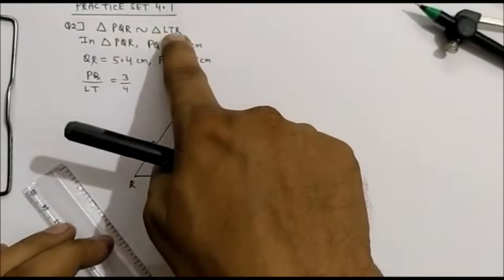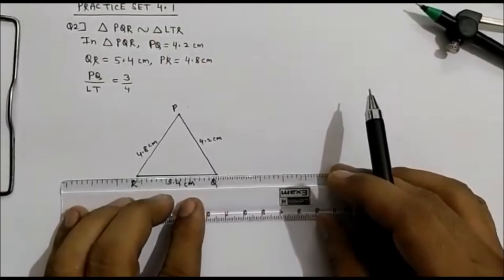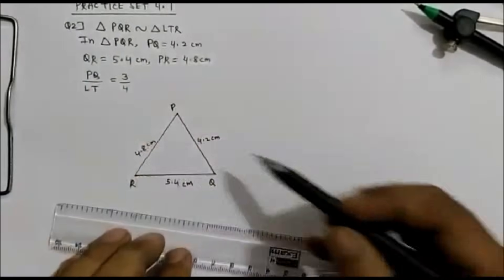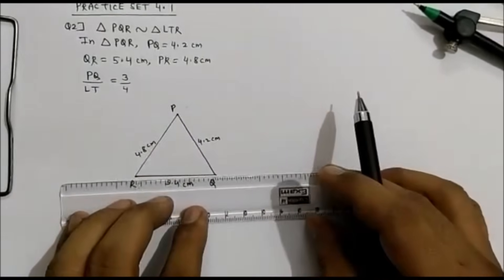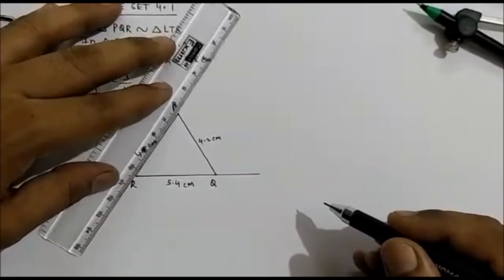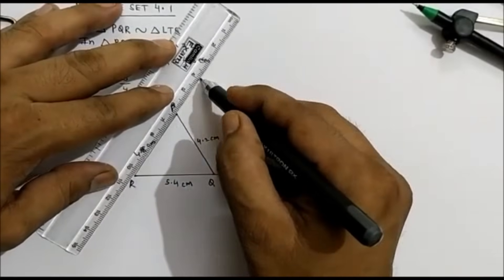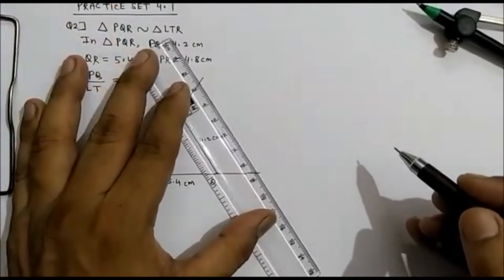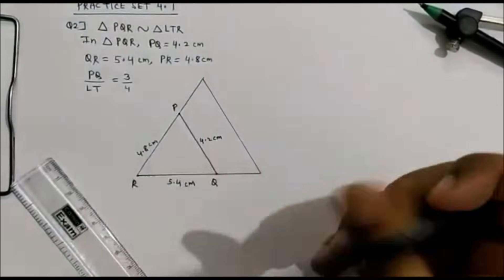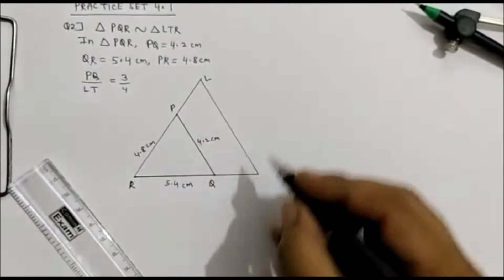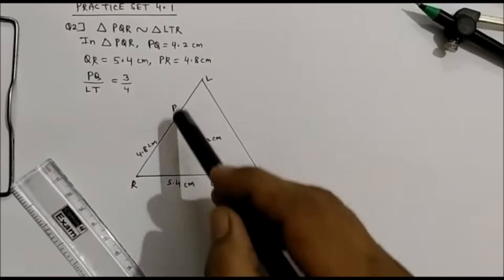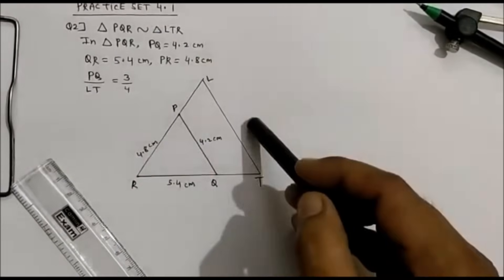Now PQR is similar to LTR, and the other triangle will be outside this because the ratio PQ upon LTR is 3 upon 4 — so if this is PQ, LTR will come outside. Just extend the lines. These are rough figures. Triangle LTR and triangle PQR — first we will construct PQR, then we will go for constructing LTR.